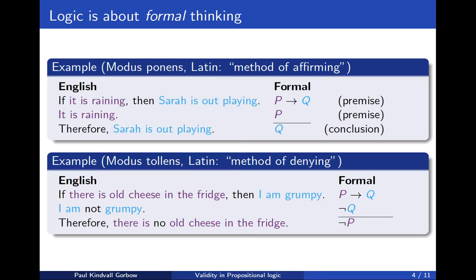Similarly, we have another argument. The first one is called modus ponens. The second one has the form modus tollens: if there is old cheese in the fridge, then I am grumpy. But I am not grumpy. Therefore, there is no old cheese in the fridge. This is a valid argument, and you can see its form on the right.